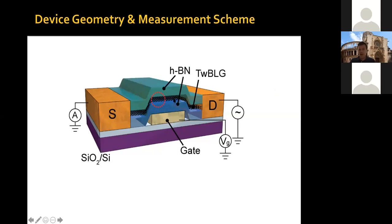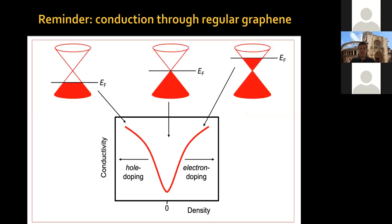We continue fabricating our device. We pick up another hexagonal boron nitride flake, and in the end we have our twisted bilayer graphene with any rotation angle we want, encapsulated at top and bottom by hexagonal boron nitride. We have made source and drain contacts to apply a voltage and measure a current, and also a nearby gate electrode — a metallic plate forming a parallel plate capacitor with the graphene — so that by applying a gate voltage we can control the electron density in the twisted bilayer graphene.